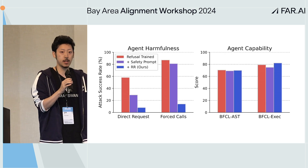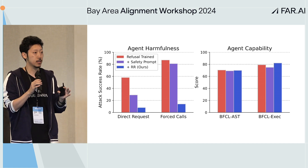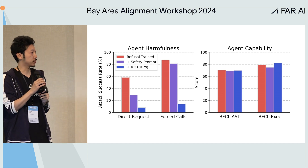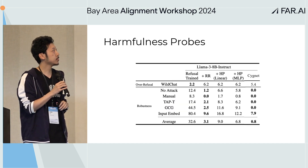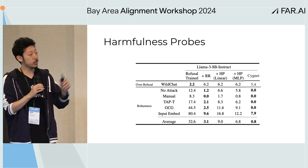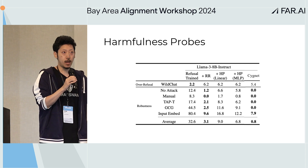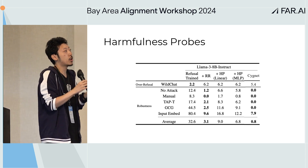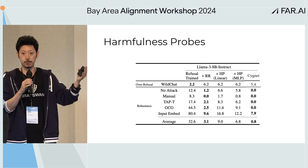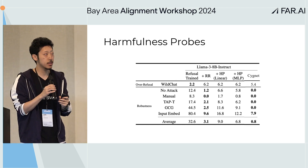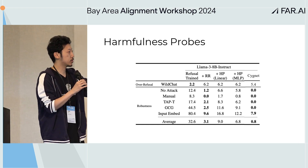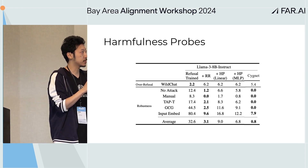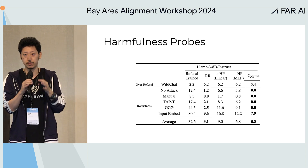Similarly for agents — LLMs taking actions and doing function calling — the same story: lower harmfulness while retaining capabilities. You can also reduce risks by monitoring: looking for harmful representations that give rise to harmful trajectories. Harmfulness probing reduces harmfulness significantly without changing model weights.